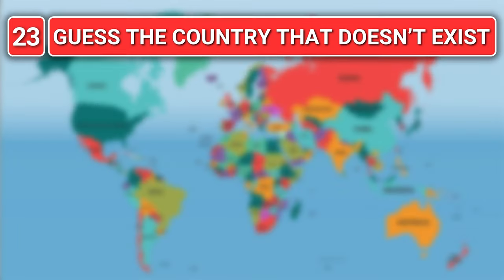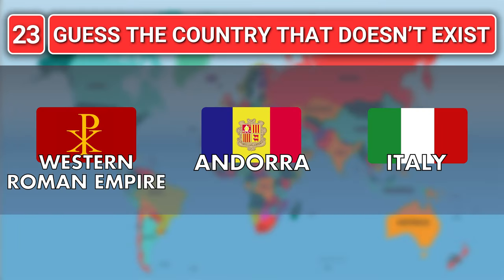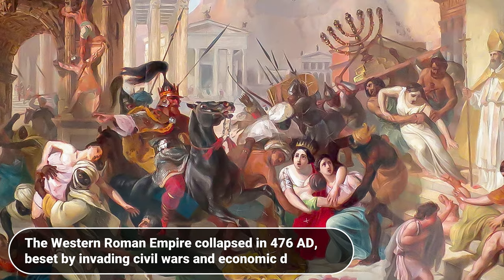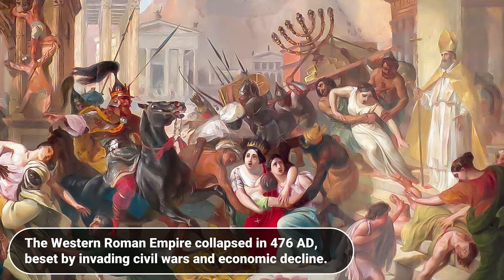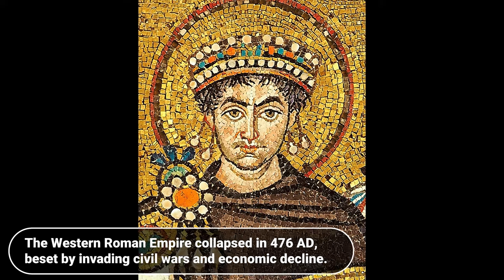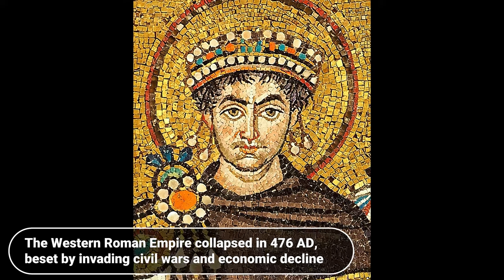Which of these countries no longer exists? Western Roman Empire, Andorra or Italy? It is Western Roman Empire. The Western Roman Empire collapsed in 476 AD, beset by invading forces, civil wars and economic decline.